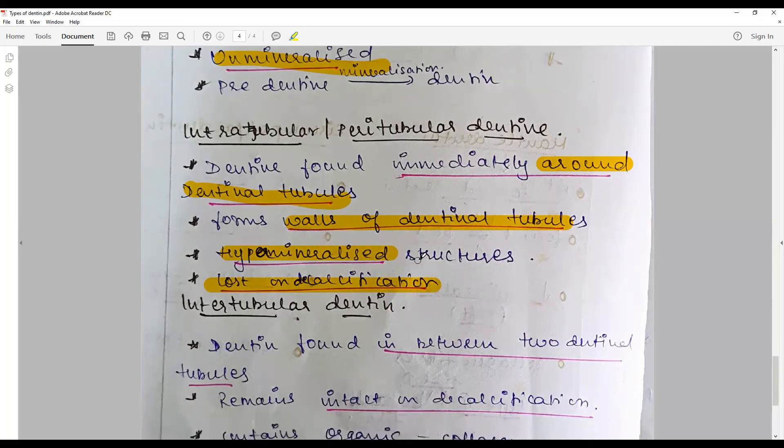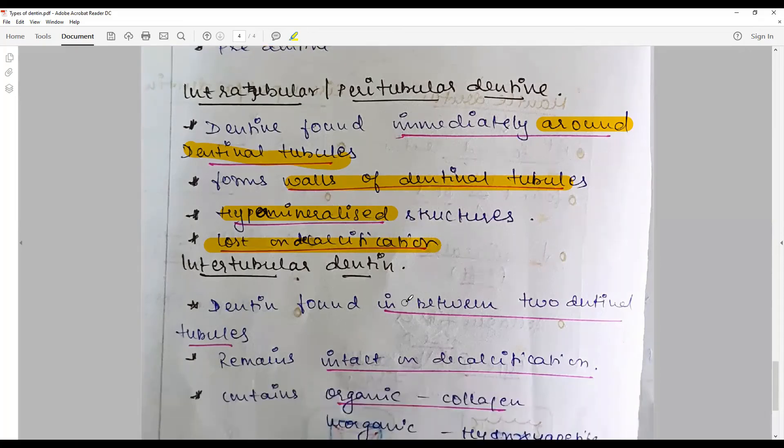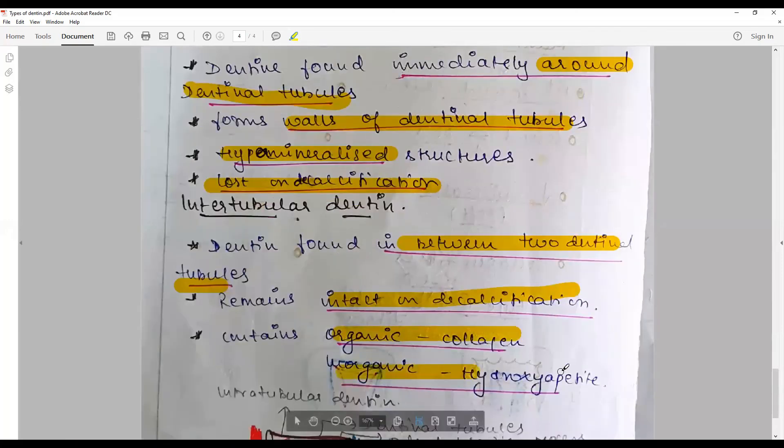Intertubular dentin formed between two dentinal tubules remains intact on decalcification, contains more of organic inorganic hydroxyapatite crystals.